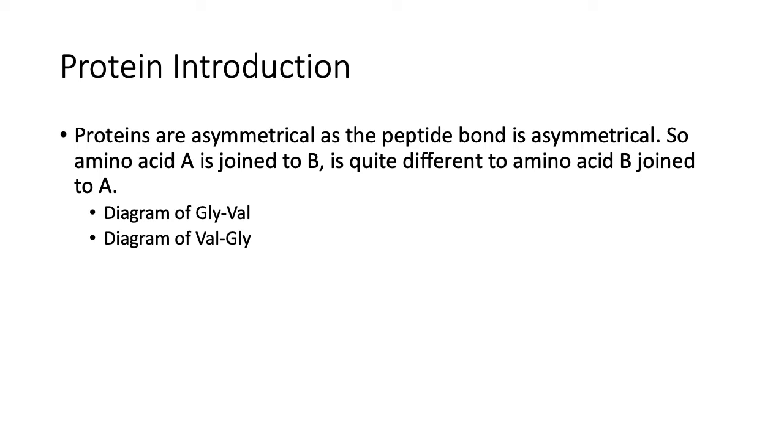Glycine is the simplest one with the amine on one end and the carboxylic acid on the other end. Valine is the second most simplest one. So here are your two amino acids.